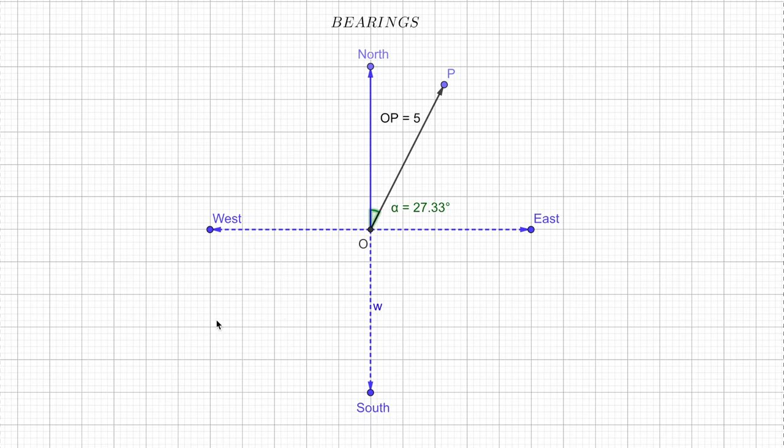This is how we have divided the map. Now we can locate point P with respect to north direction by two important values: one is called the distance from O to P, and second is the bearings. Now bearings is nothing but the angle made by the line OP.